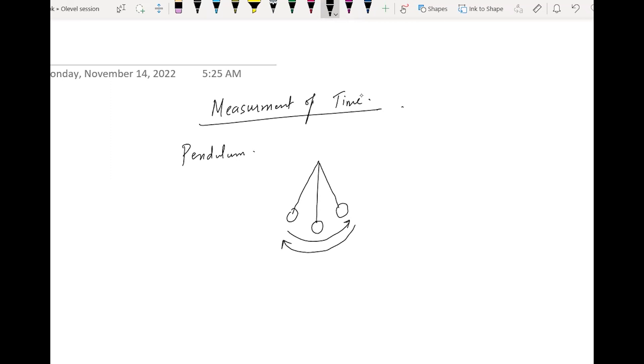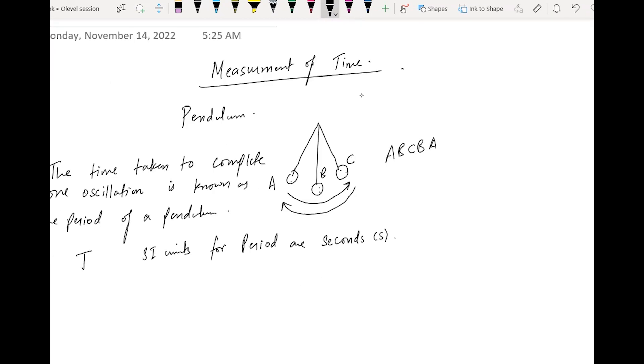It goes here, it comes back - this is one complete oscillation. I can write here: A, B, C. One complete oscillation is from A to B to C and back to B and A. The time taken to complete one oscillation is known as the period of a pendulum. Units for time period are seconds, small s, for example.